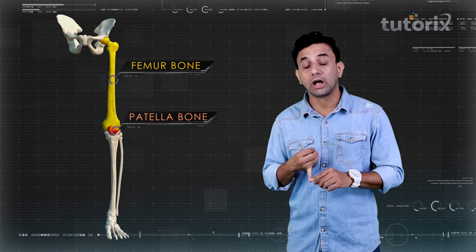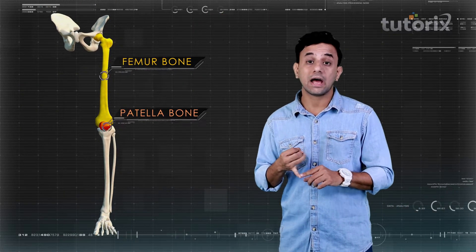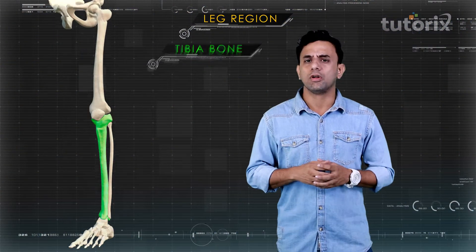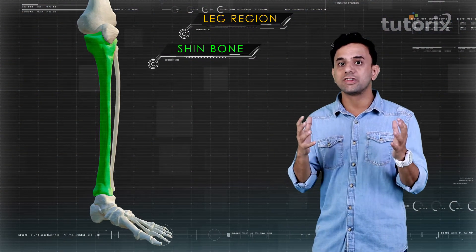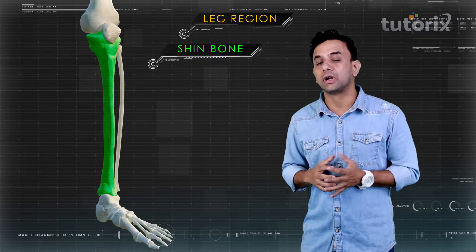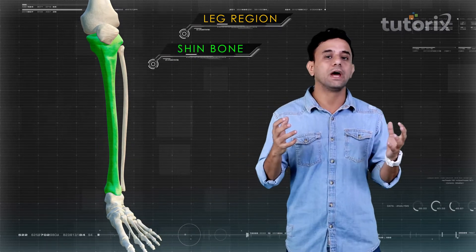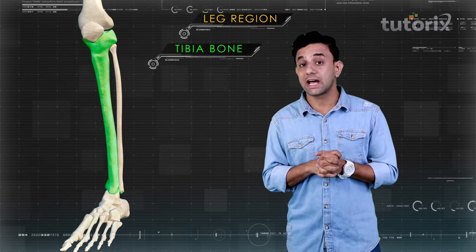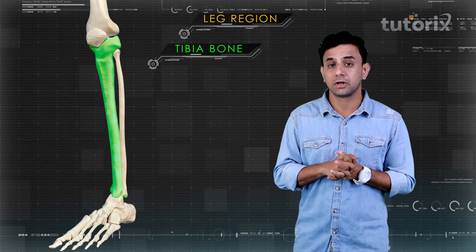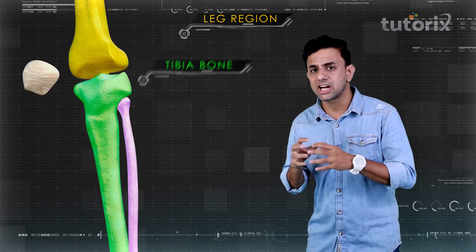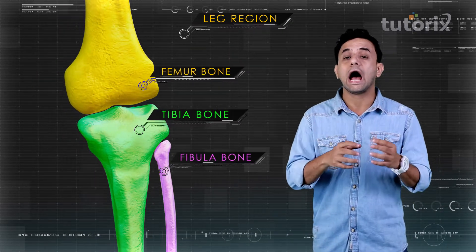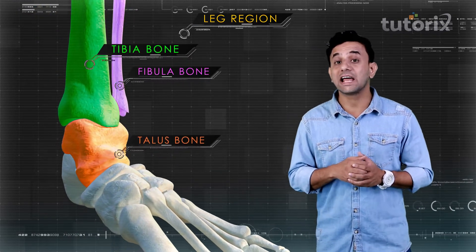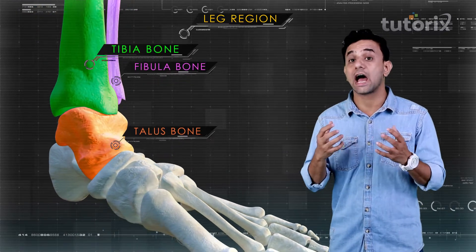The tibia is also known as the shin bone and is the major weight-bearing bone of the leg. The tibia is attached proximally to the fibula and the femur, and distally to the fibula and the talus, which is the ankle bone.